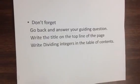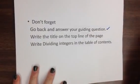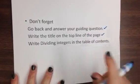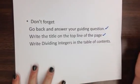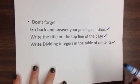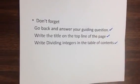Don't forget, go back and answer your guiding question. Go back and make sure you wrote the title on the top line of your page and then write this in your table of contents. You don't have to write it. If you took two pages, you don't need to write it for both pages, just the beginning page. So do these three things and you are done with your homework. Have a great night.